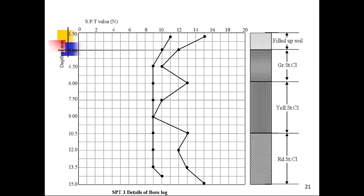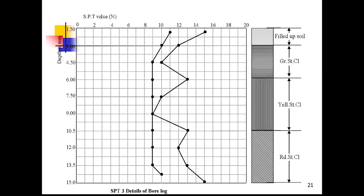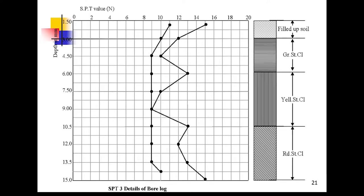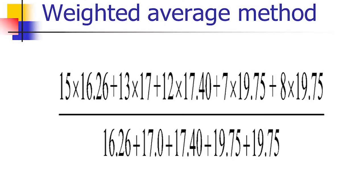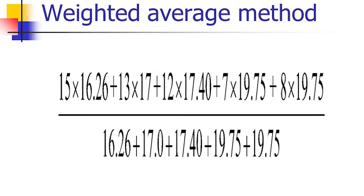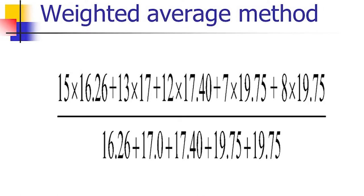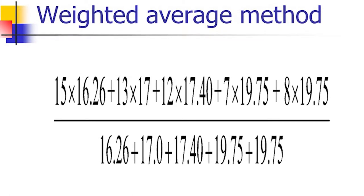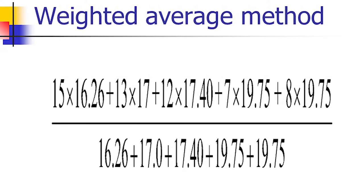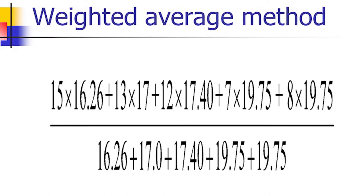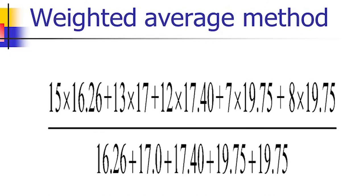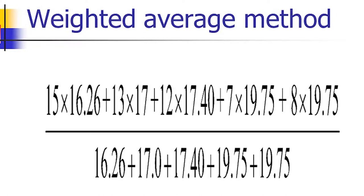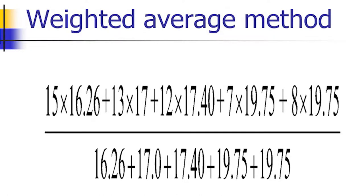Depending on the depth, the corrected N value and actual N value can be plotted. Once plotted, an N design value is determined using the weighted average method: N design equals the sum of (N value at each depth × bulk or dry density at that depth) for all depths, divided by the sum of all densities. This gives a single N value usable for design.